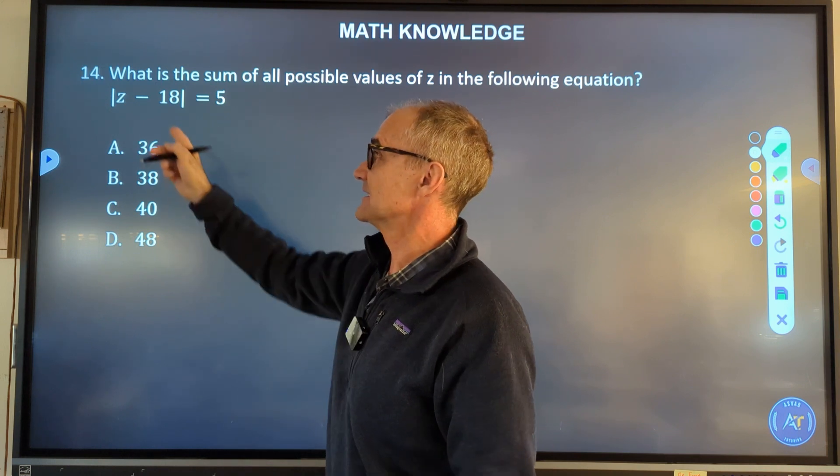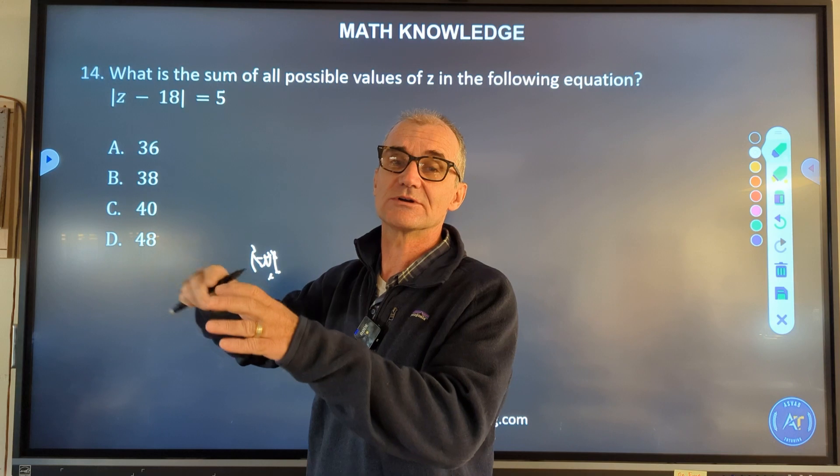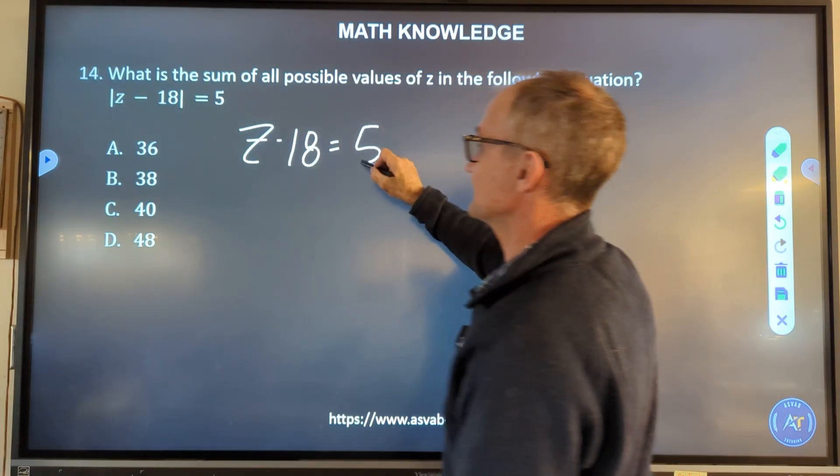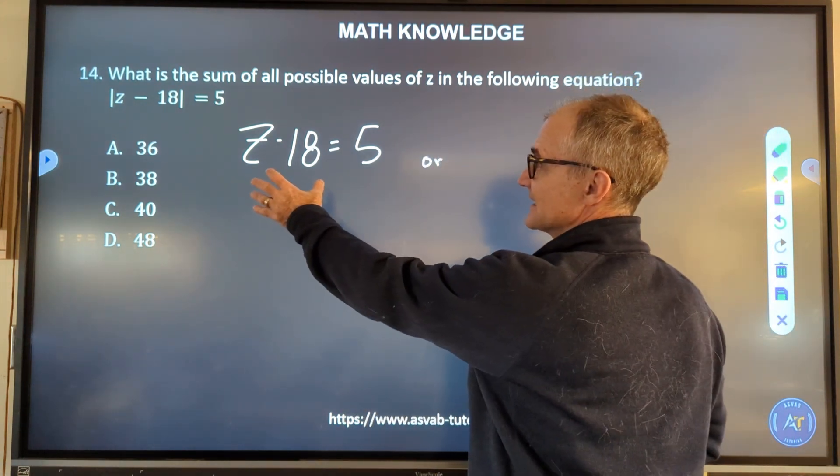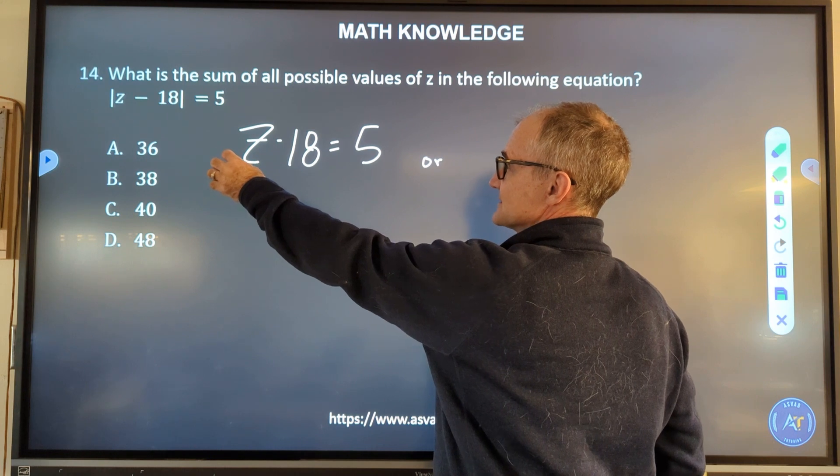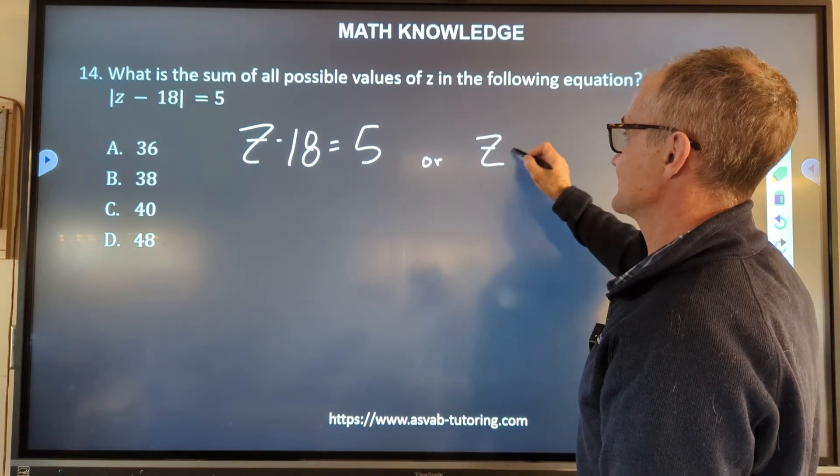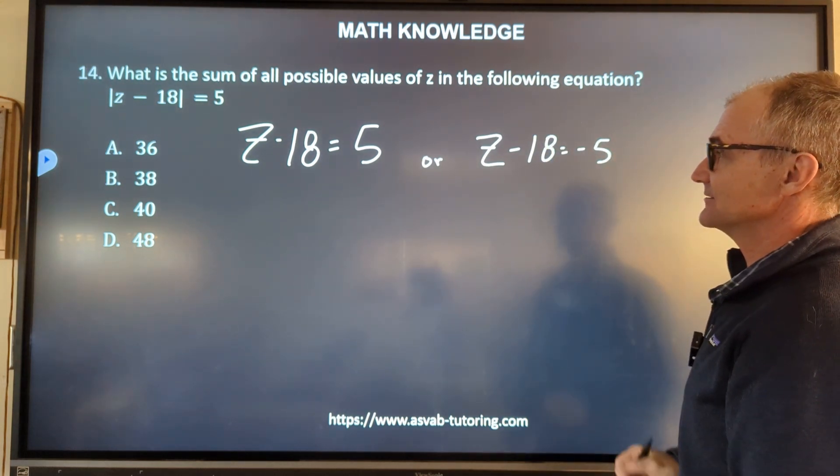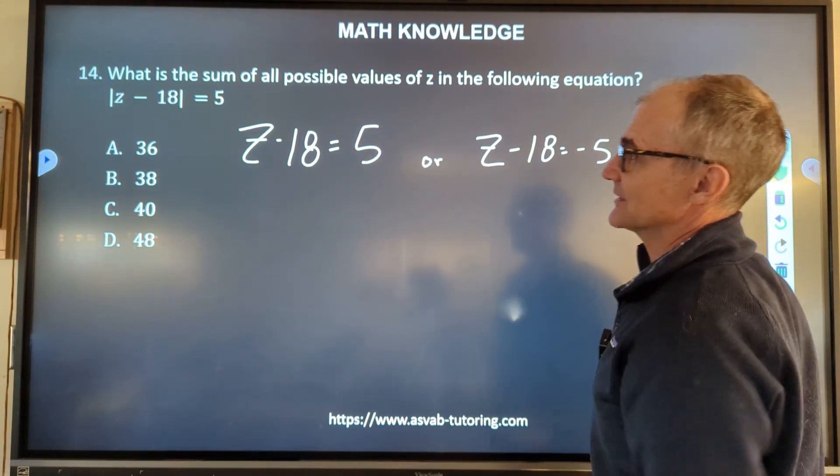So what that means is whatever z - 18 is, it could either be positive or negative. So either z - 18 equals 5, or the other possibility is that this whole thing is negative, right? So this is plus or minus. So I divide by a negative and that's going to give me z - 18 equals -5, because if this thing were negative, I would give it the absolute value and make it positive.